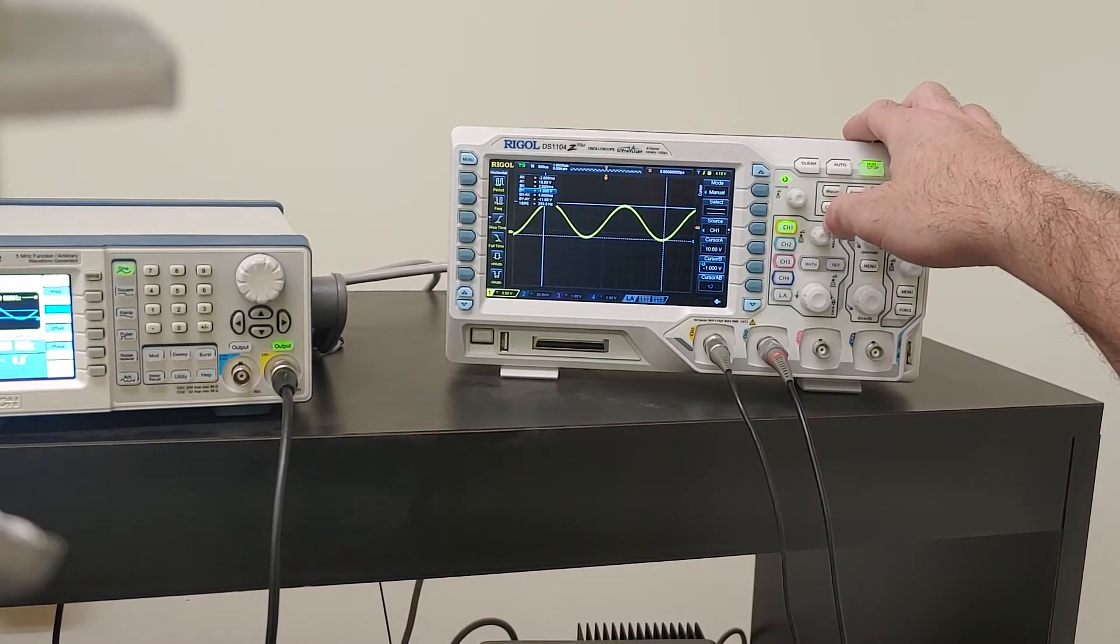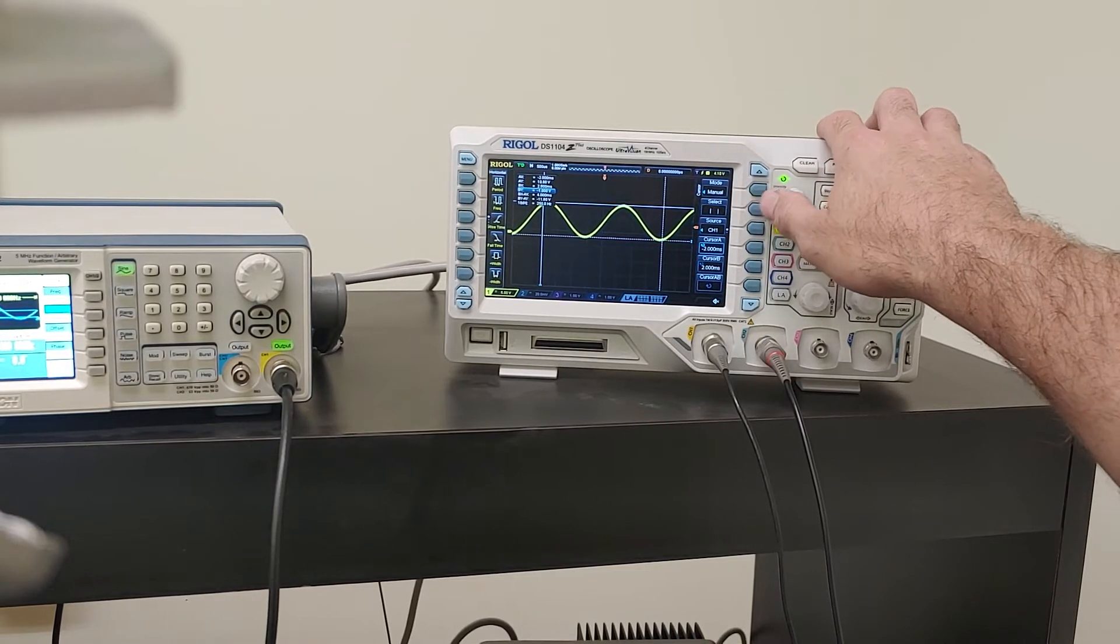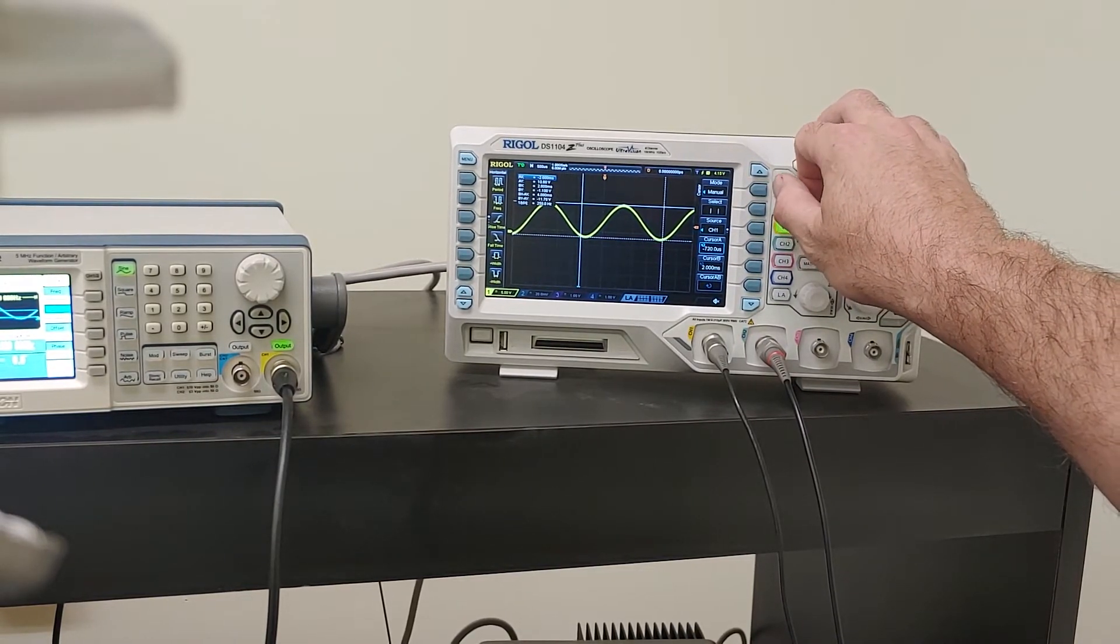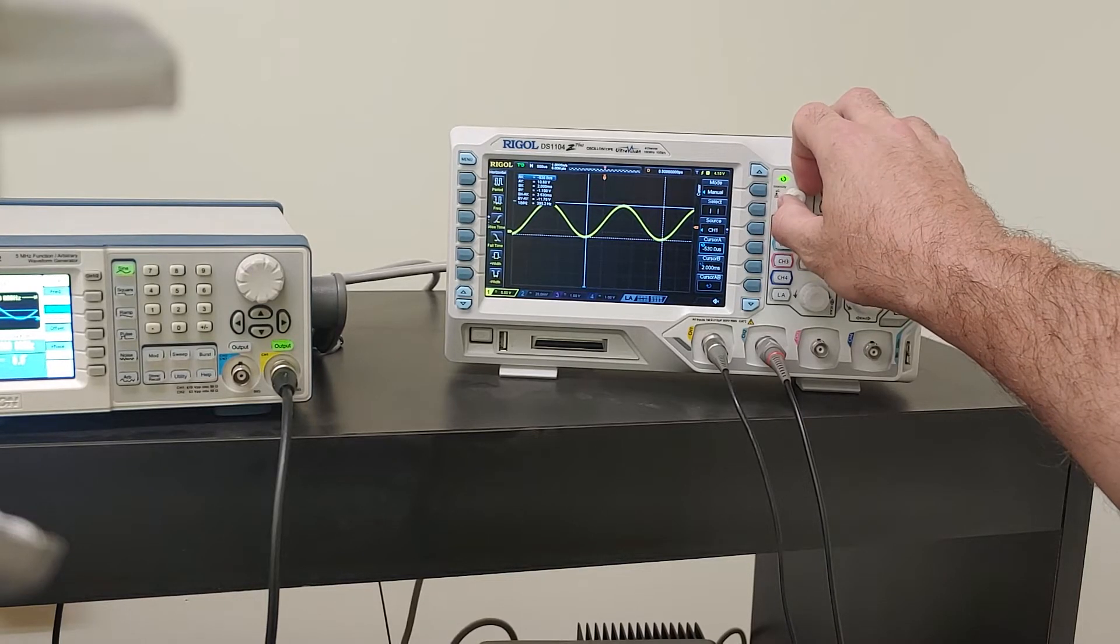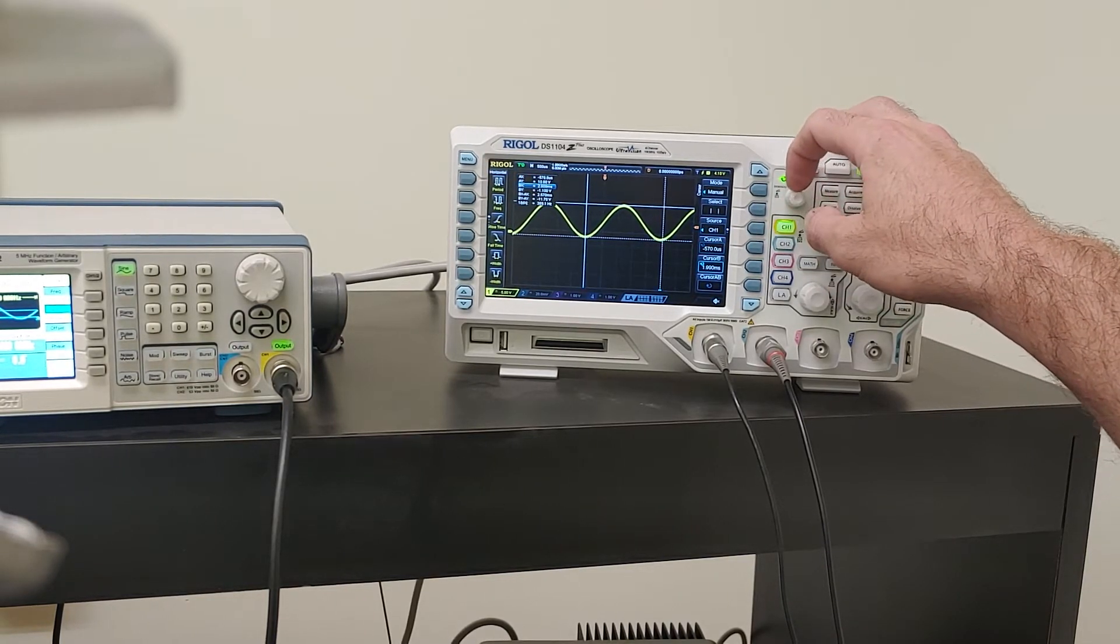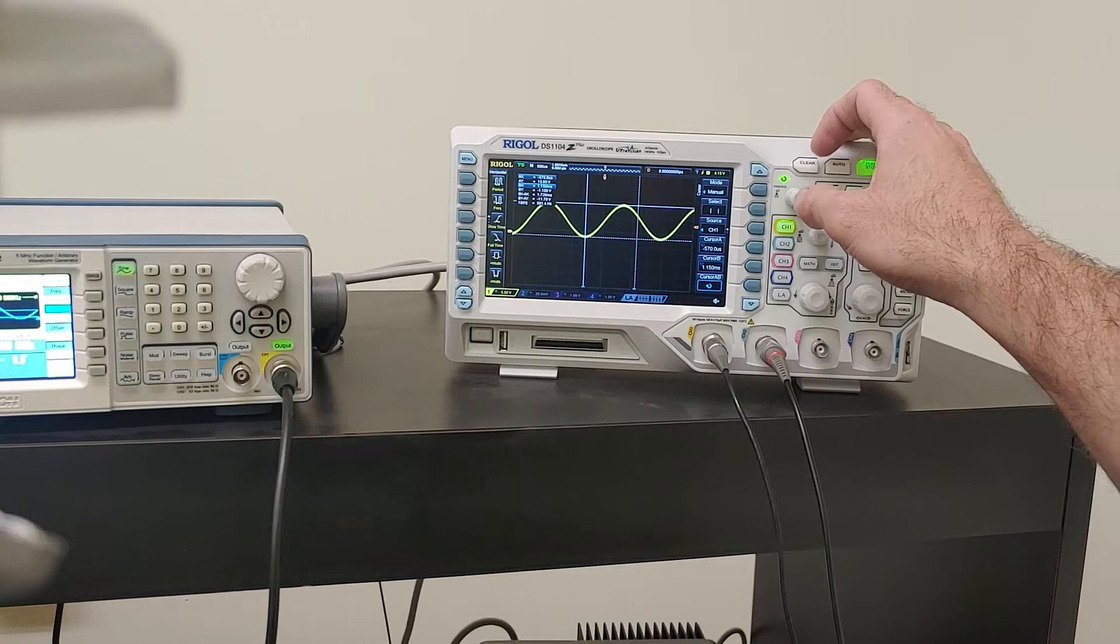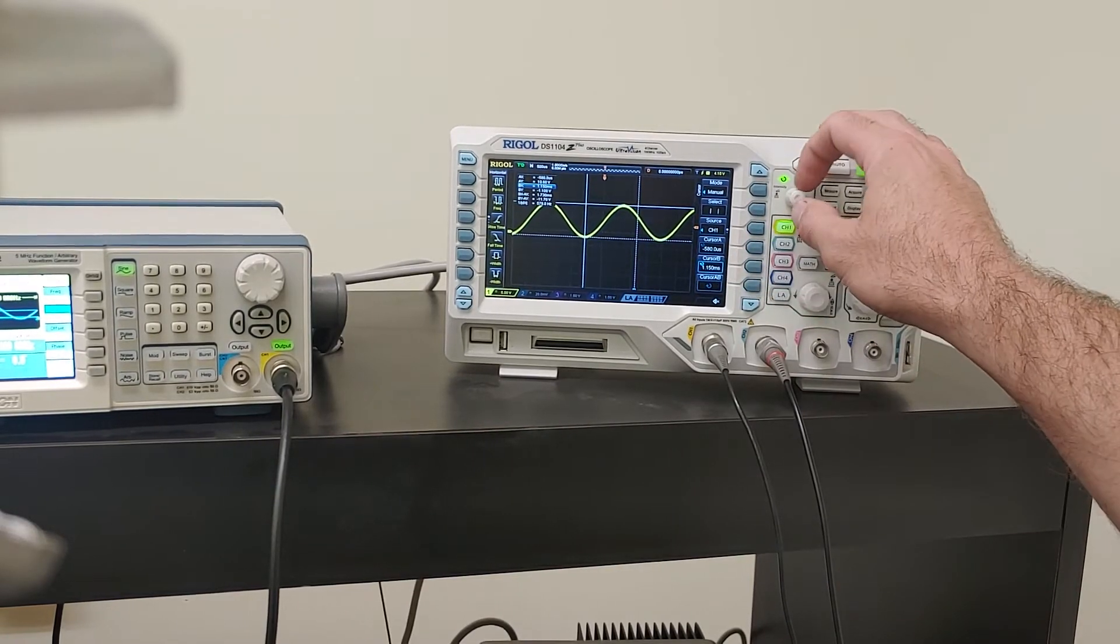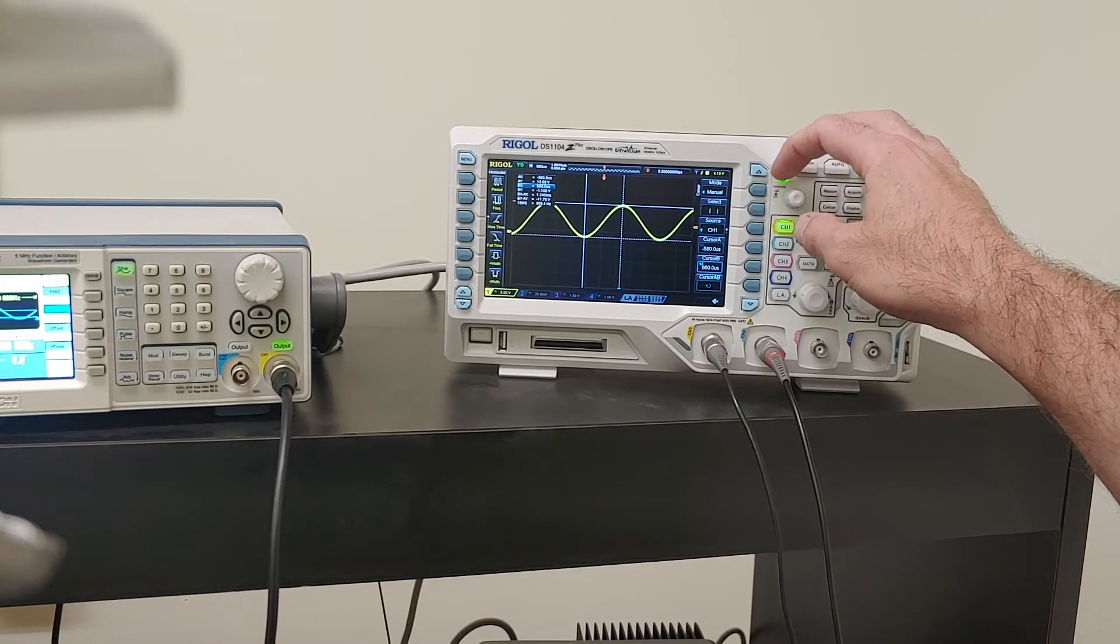The other thing that I can do, though, is I could measure my frequency. I can select my horizontal bars and put maybe one at the bottom point there. I press this once again. I'm pressing this button in and it's selecting my different cursors. There's half a waveform. There's a full waveform.